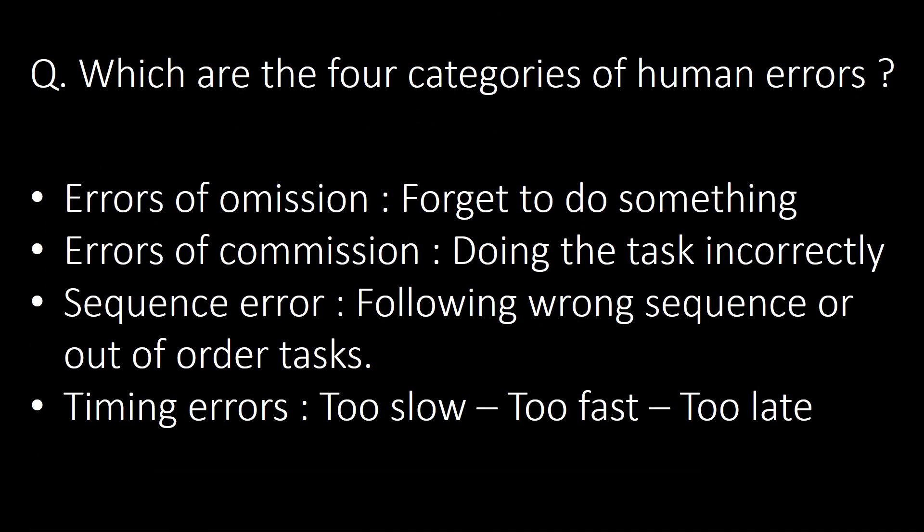What are the four categories of human errors? First, errors of omission — forgetting to do something; second, errors of commission — doing the task incorrectly; third, sequence errors — following the wrong sequence or performing tasks out of order; and fourth, timing errors — activities performed too slow, too fast, or too late.